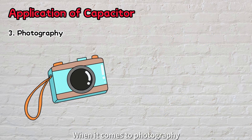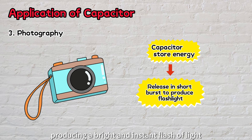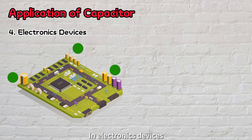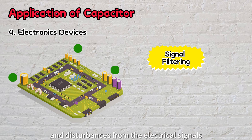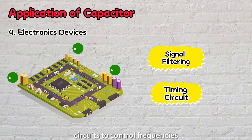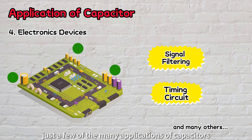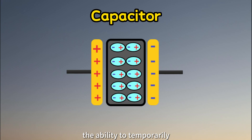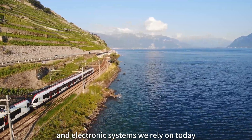When it comes to photography, capacitors are essential in camera flashes. A capacitor stores electrical energy and releases it in a short burst, producing a bright and instant flash of light to capture images in low-light conditions. In electronics devices, capacitors are widely used for electrical signal filtering, removing unwanted noise and disturbances from electrical signals. They are also used in timing circuits to control frequencies and generate precise time intervals. These examples highlight just a few of the many applications of capacitors. Although a capacitor is just a simple component made of two conductor plates separated by dielectric, its ability to temporarily store electrical energy has made significant contributions to the functionality and efficiency of the electrical and electronic systems we rely on today.